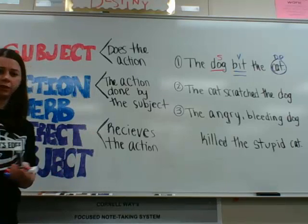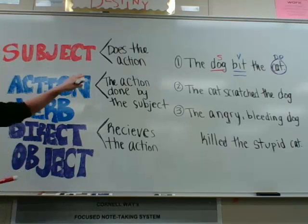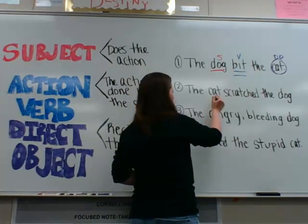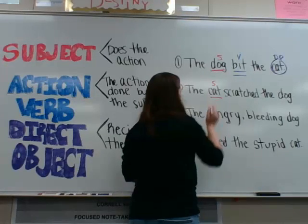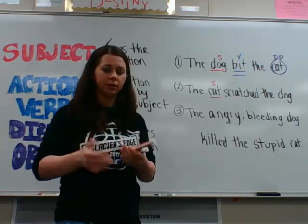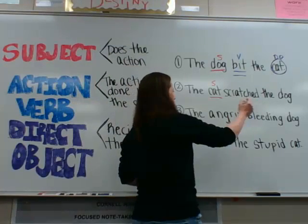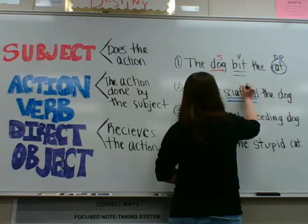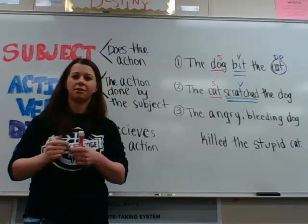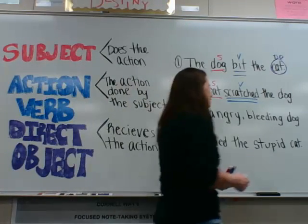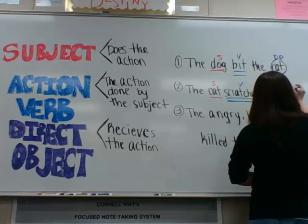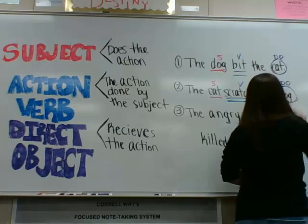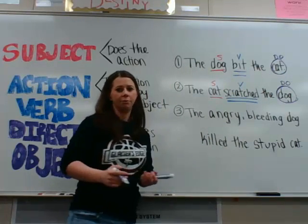Sentence number two: we start with the subject. 'The cat scratched the dog' — what scratched the dog? The cat did, so underline once and write an S above it. What did the cat do? It scratched, so underline that twice and write a V above it. Then the direct object — what did the cat scratch? The dog. That would be my direct object.